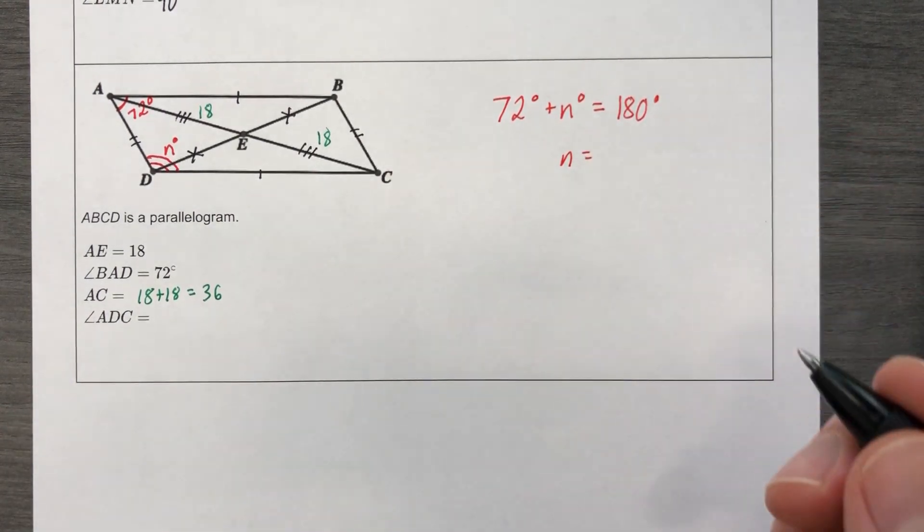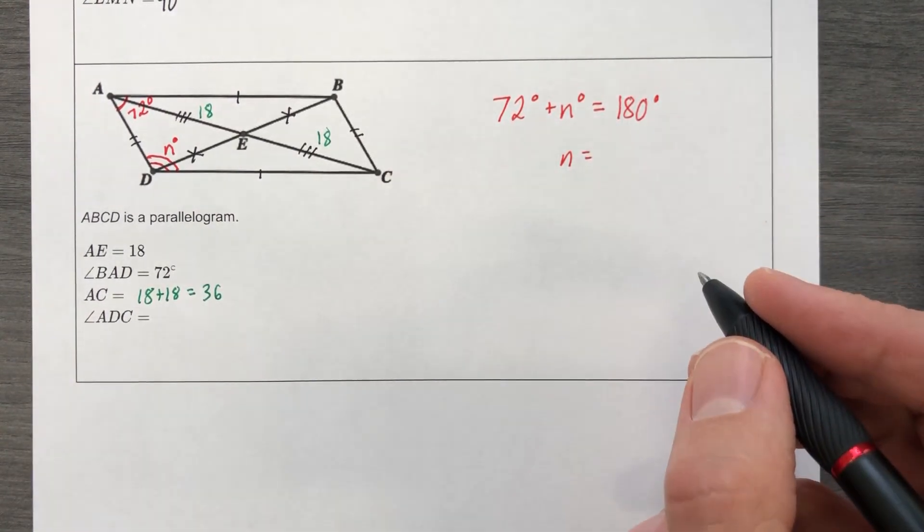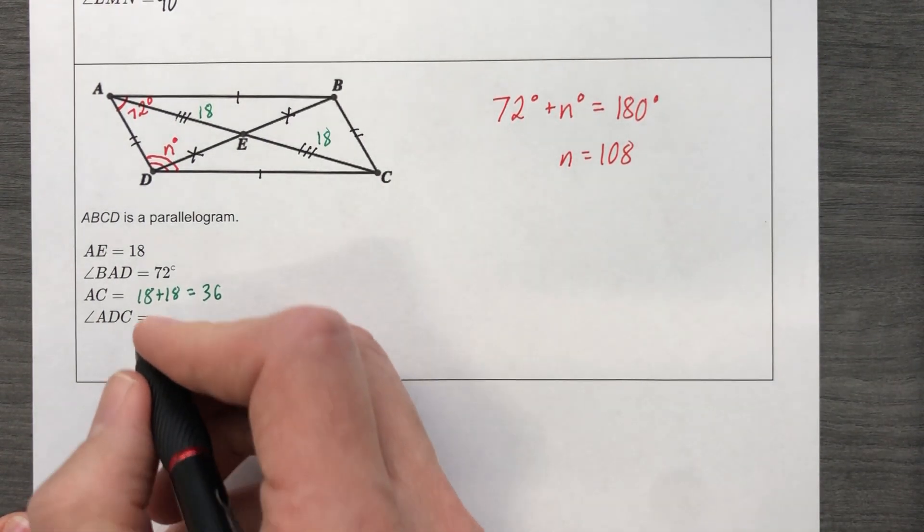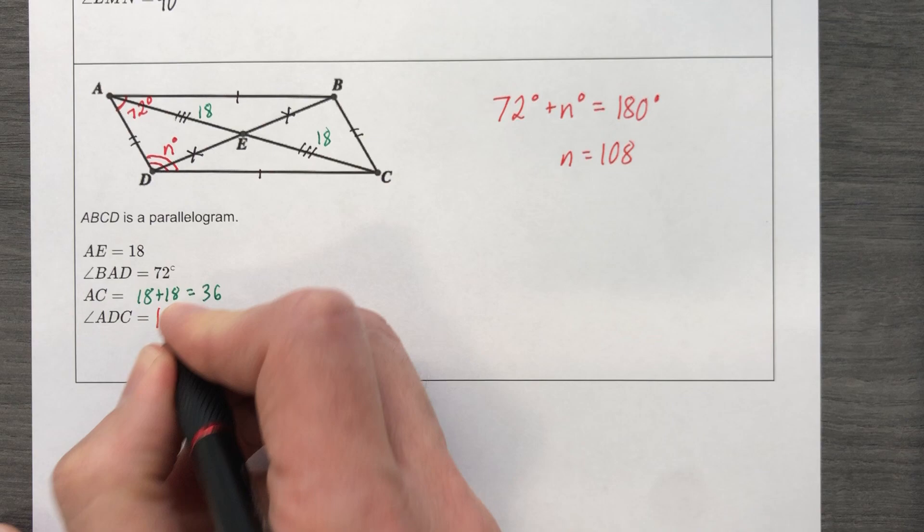So N is equal to 180 minus 72. That's going to give me 108. N is equal to 108. So ADC is a 108 degree angle.